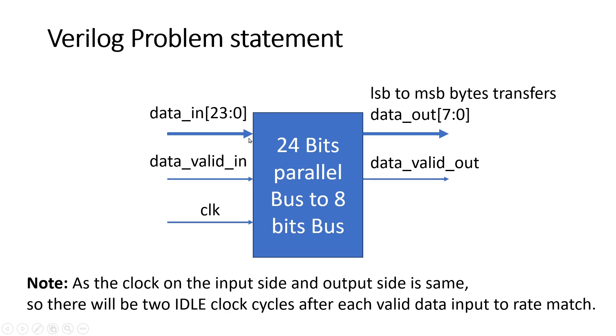Now in its operation, when we apply three bytes of data at the input along with this valid signal, that should travel to the output in three clock cycles, in consecutive three clock cycles. And the sequence of events will be: firstly we will transfer the LSB byte, then the mid byte, then the MSB byte.